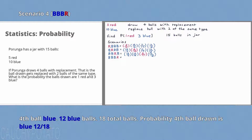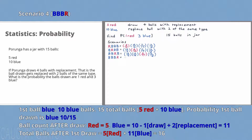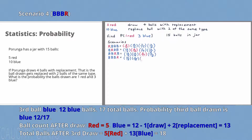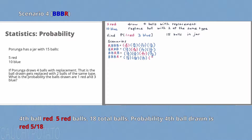Finally, the scenario in which the first three balls are blue and the fourth ball is red. First ball drawn is blue: 10/15 probability. Second ball drawn is blue: 11/16 probability. Third ball drawn is blue: 12/17 probability. And lastly, the fourth ball drawn is red: 5/18 probability.